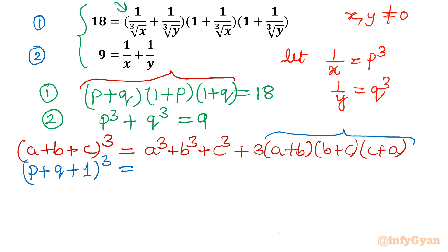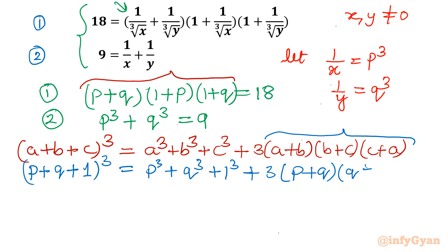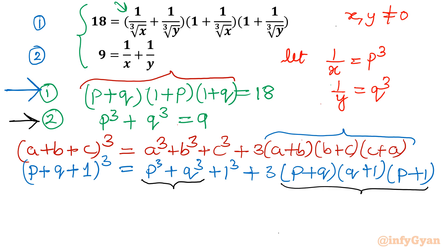Focusing on that section: it becomes p cubed plus q cubed plus 1 cubed, plus 3 times (p+q)(q+1)(1+p). Our equation number 1 is p plus q times 1 plus p times 1 plus q, which equals 18 — the same thing. So I will substitute equation 1 and equation 2 into the identity using the algebraic formula.